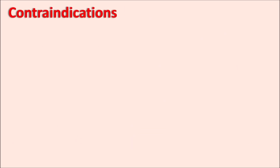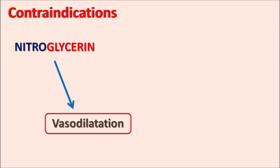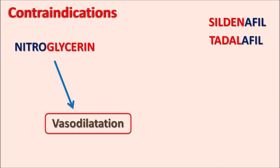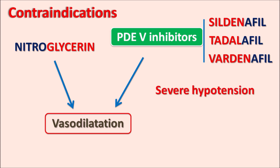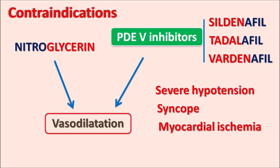Now let us see the contraindications of nitroglycerin. Nitroglycerin is a vasodilator, so it should be carefully given with other drugs which also produce vasodilatation. Among these, important drugs that are contraindicated are sildenafil, tadalafil, and vardenafil — all these drugs ending with the suffix '-afil'. They are phosphodiesterase type 5 inhibitors, which are used to treat erectile dysfunction. These drugs can also produce vasodilatation, and when combined with nitroglycerin, they can produce severe vasodilatation resulting in severe hypotension, leading to syncope or even myocardial ischemia, which is fatal to patients. That is why nitroglycerin is contraindicated with phosphodiesterase type 5 inhibitors.